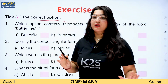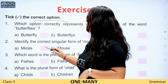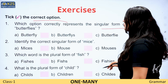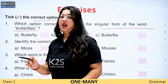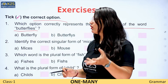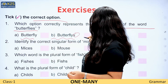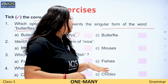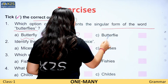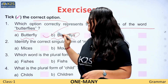This is the last exercise of this video. We have to tick the correct option. Which option correctly represents the singular form of the word butterflies? We need singular. Butterfly — this spelling is wrong. And butterfly — this spelling is also wrong. So the right answer is butterfly.